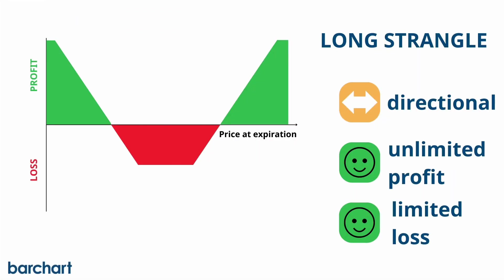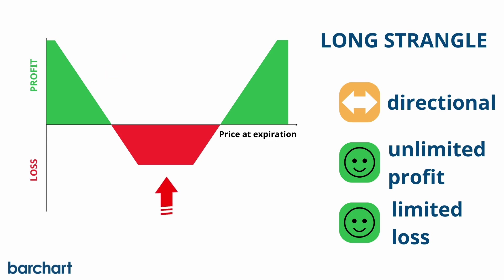The trade is profitable when the underlying asset's price moves beyond the break-even points on the upside and the downside. The maximum loss condition happens when both options expire worthless and is limited to the net premium paid to purchase the long strangle.